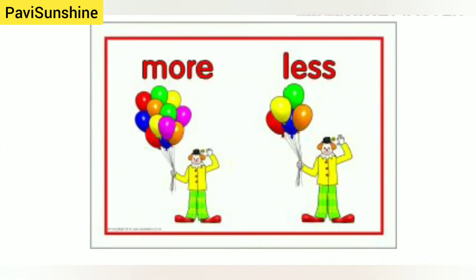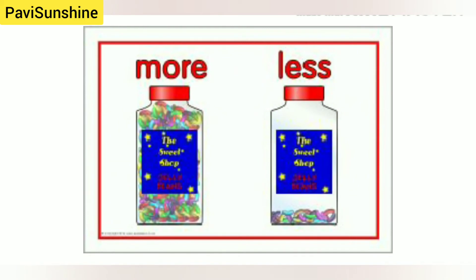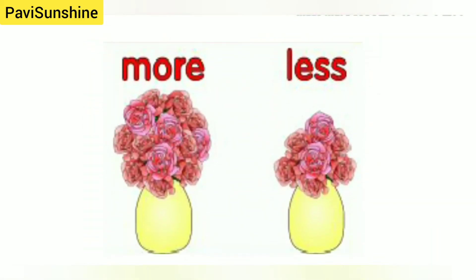Now we have more and less. One clown has more balloons and other has less. More, less. One pot has more flowers and other has less.